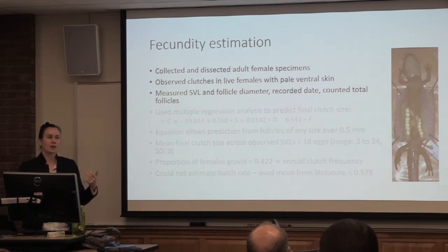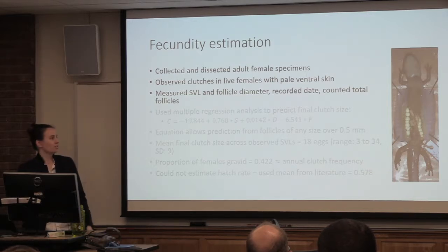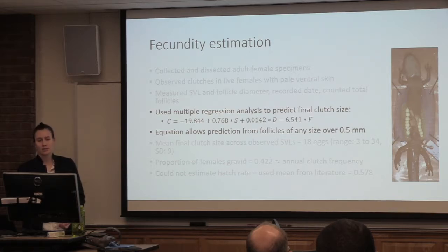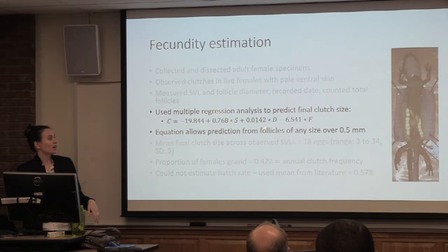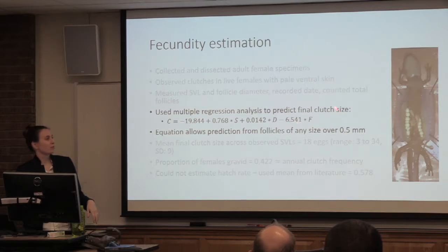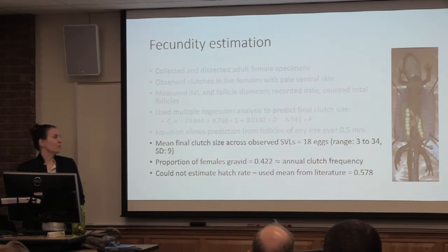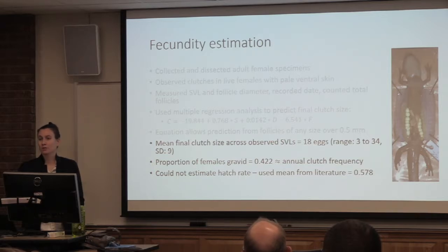There are many papers where people try to figure out a cutoff point at a certain follicle size. Instead, we developed a regression analysis where final clutch size C equals an intercept plus a coefficient times snout-vent length, plus a coefficient times the capture date, plus a coefficient times follicle diameter. This allows us to use data on follicles regardless of size. What we finally calculated was a mean final clutch size across observed snout-vent lengths of approximately 18 eggs, with a range from 3 to 34 and a standard deviation of 9.